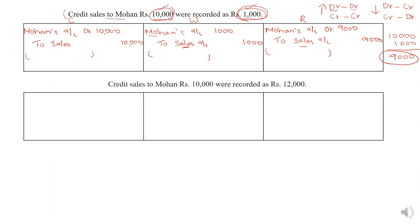The next statement: credit sales to Mohan was recorded as 12,000. The same situation, but instead of 10,000 we recorded 12,000. In this situation we have to decrease the value. If we have to decrease the value, the debit should be credited and the credit should be debited. The difference is 2,000 — 12,000 was recorded, but we should have recorded 10,000 — so the rectifying entry is given for 2,000 rupees only.